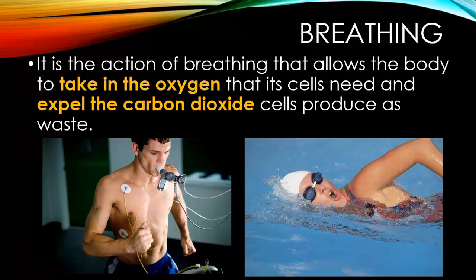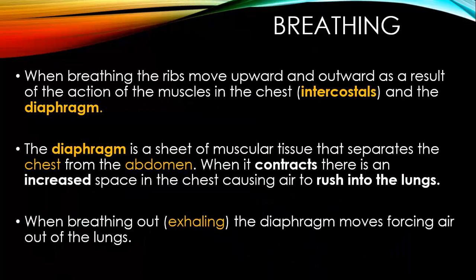Breathing — it is the action of breathing that allows the body to take in the oxygen that the cells need and expel the carbon dioxide that the cells produce as waste. When breathing, the ribs move upward and outward as a result of the action of the muscles in the chest, called the intercostals. The diaphragm is a sheet of muscular tissue that separates the chest from the abdomen. When it contracts, there's an increased space in the chest, causing air to rush into the lungs. When exhaling, the diaphragm then moves, forcing air out of the lungs.